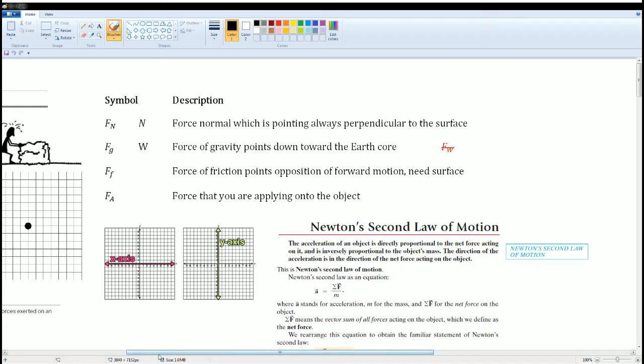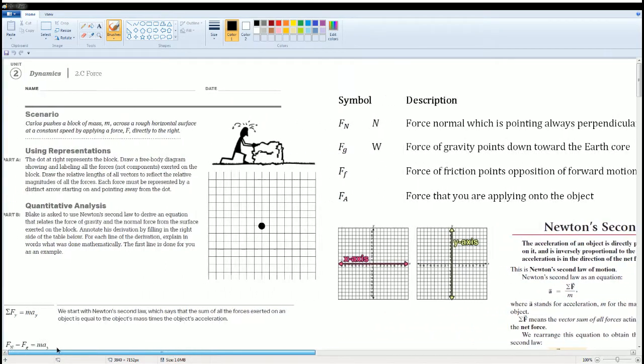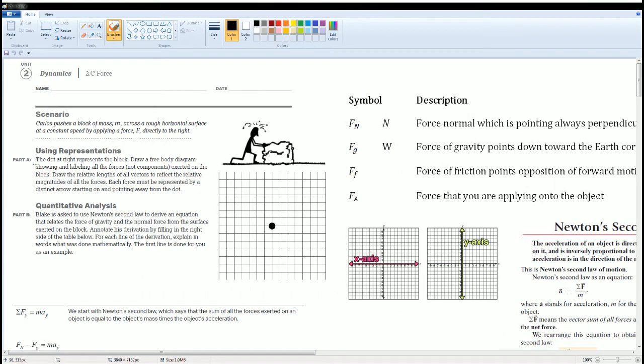F_A is the force applied, and that is the force that you apply on the object. Sometimes you might see this as the force thrust. Using that information, we can answer Part A. The dot at the right represents the block. Draw a free body diagram showing and labeling all the forces. Make sure all the lengths are correct as well.